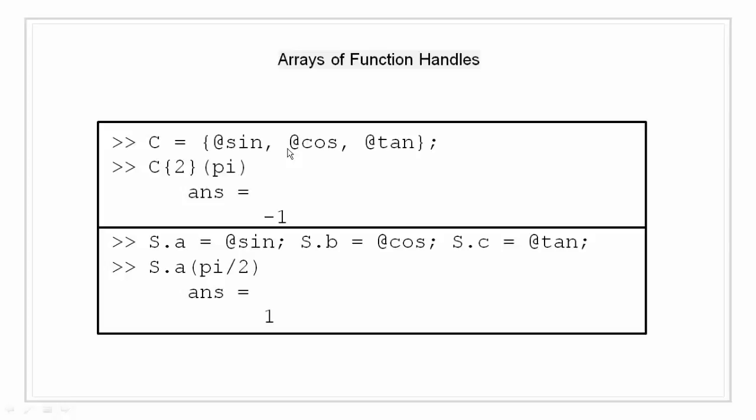We can store function handle in a structure array as shown in the second box. We have 3 fields that will act as an individual handler for each of the 3 functions. We have a field A that handles sine, we have a field B that handles cos and field C that handles tangent. So using dot notation and field name we can pass our input argument to sine and get a value out of it. So here in the example I have passed value of pi/2 to the function handle of sine that is S.A and we got an output of 1.